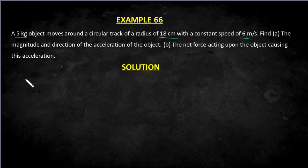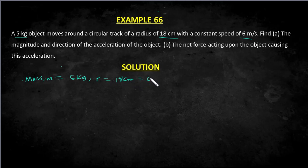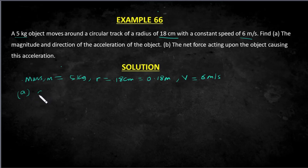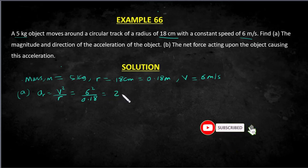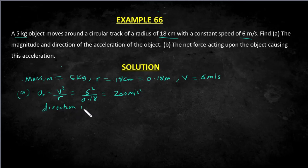Let's get the data first. The mass is m = 5 kg. The radius r is 18 centimeters; we convert to meters by dividing by 100, giving us 0.18 meters. The velocity v is 6 meters per second. We need to find the magnitude and direction of the acceleration. The magnitude — the centripetal acceleration — is v squared over r. With v = 6 and r = 0.18, we get 200 meters per second squared. The direction is towards the center.